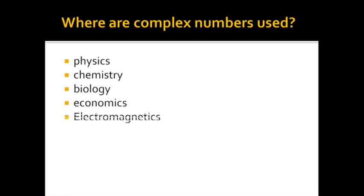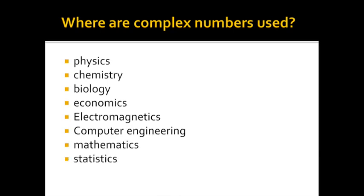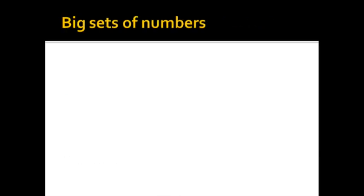So where are complex numbers used? Well, they're used in physics, chemistry, biology, economics, and especially in electromagnetics, computer engineering. A lot of things about your cell phone and your computer, your laptop, your iPad, your iTouch, all use some semblance of complex numbers. In fact, we're becoming increasingly dependent on them. Obviously, fields of mathematics use them, and statistics are getting some use out of it as well.